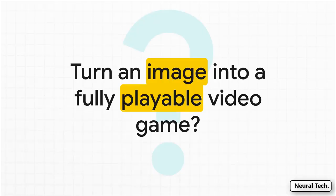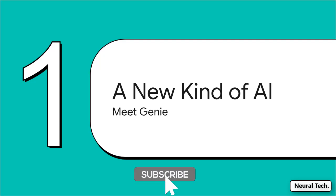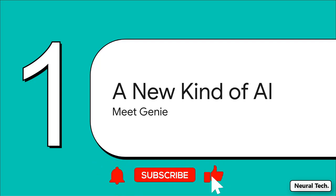What if you could take any image you have — a photo you took, a quick sketch on a napkin, maybe some professional concept art — and with a click, turn it into a playable 2D video game? Well, that's not a what-if anymore. That is exactly what Google's Genie can do. So what kind of AI can possibly pull this off? Let's get into what makes Genie such a fundamentally different beast from what we've seen before.